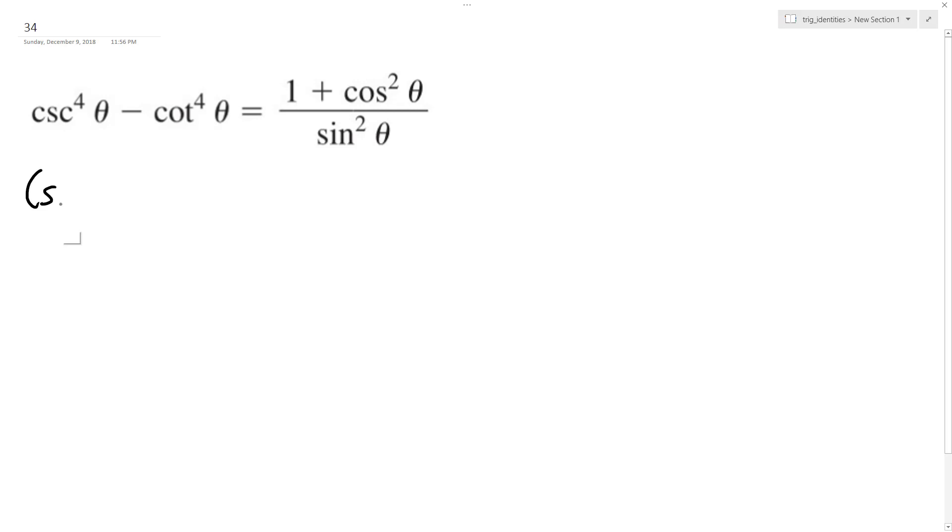So we can do this. We can make this into cosecant squared theta minus cotangent squared theta times cosecant squared theta plus cotangent squared theta.